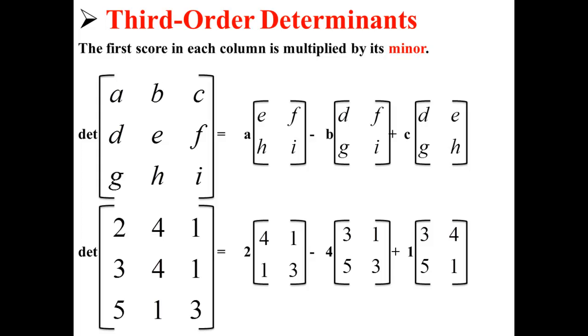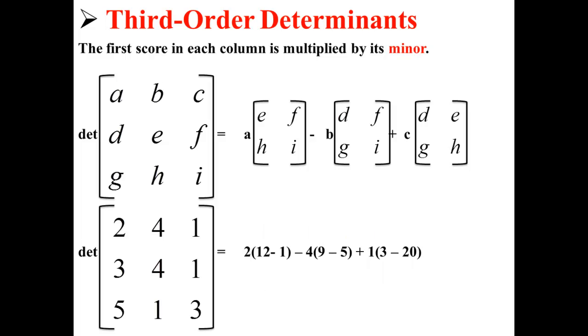Using what we know about scalar multiplication, this simplifies to 2 times 12 minus 1, minus 4 times 9 minus 5, plus 1 times 3 minus 20. This further simplifies to 22 minus 16 minus 17 for a final answer of negative 11.